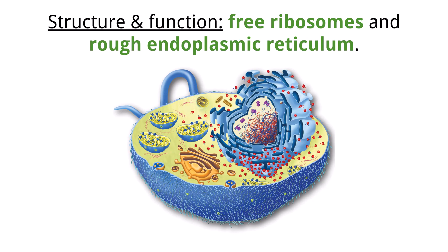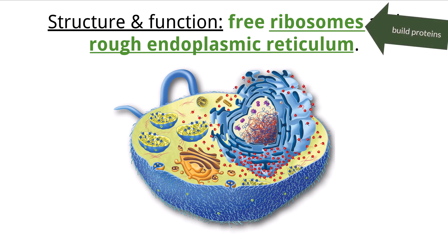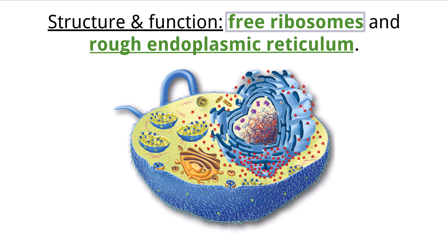Let's talk about some additional organelles that you need to know the structures and functions of for the HL exam. We have ribosomes and the rough endoplasmic reticulum. Ribosomes function to build proteins based on specific code originating from the DNA, which we discuss in greater detail when we cover transcription and translation. Within a eukaryotic cell, ribosomes can be either free-floating or attached to the endoplasmic reticulum, in which we call it the rough endoplasmic reticulum because it has ribosomes attached to it.